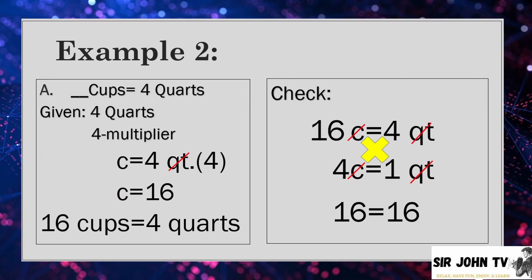And here is our example number 2. Blank cups equals 4 quarts. We will be using the approximate liquid measurement conversion factors here. Let us take a look. What is the multiplier to get cups? We have 4. Here is the given, we have 4 quarts, and our multiplier is 4. To get the amount of cups to 4 quarts, we will just multiply 4 quarts by 4, and the answer is 16.